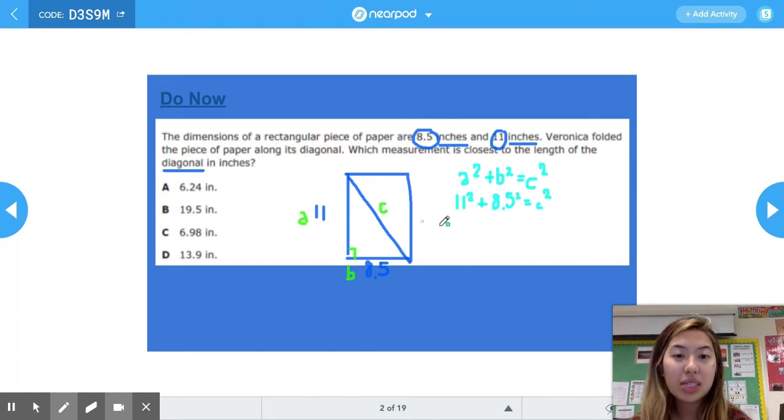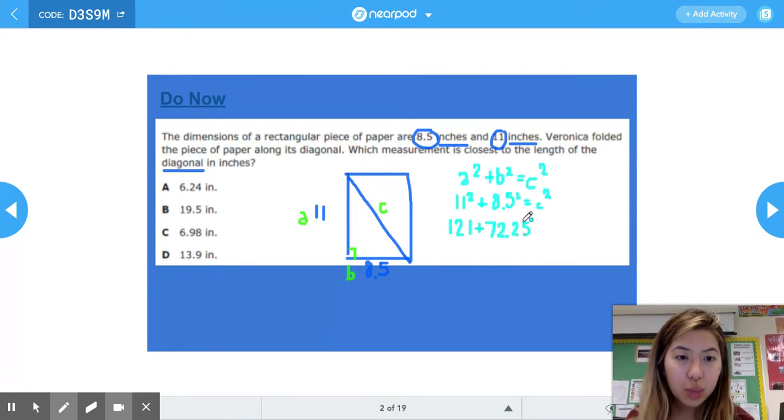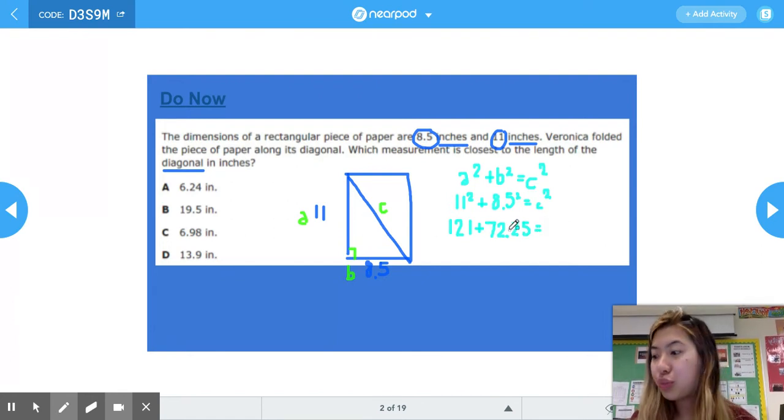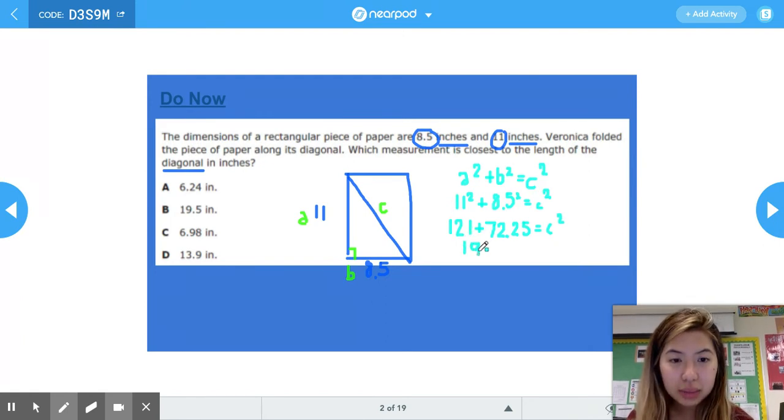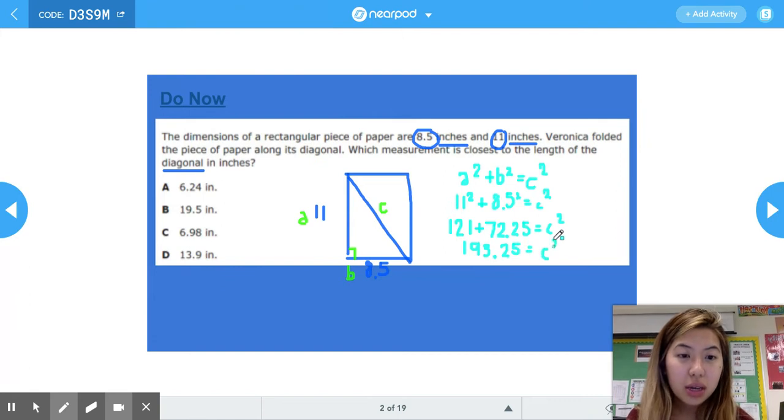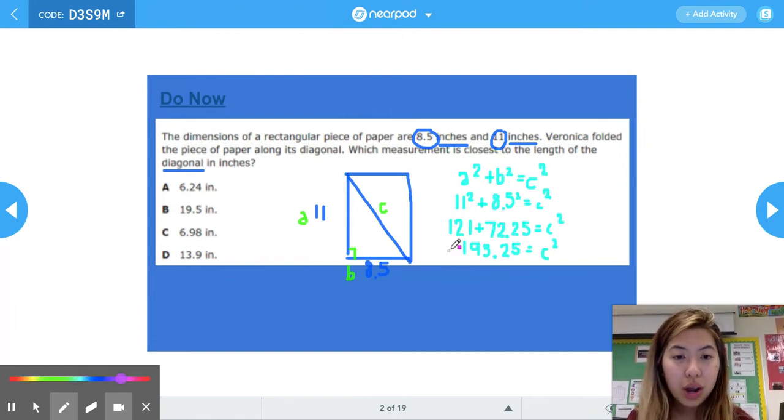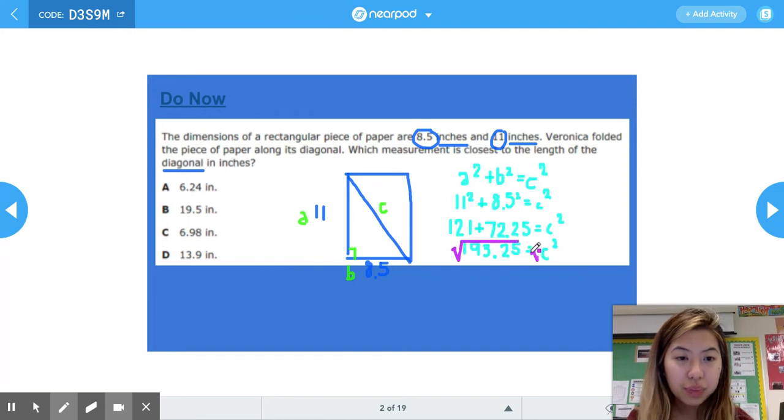11², 11 times 11 is 121. Then we have 8.5², so 8.5 times 8.5, which is 72.25. Then we add together 121 plus 72.25, which gives us 193.25. And we just want to find out what c is. To do that, we're going to find the square root of 193.25. When we round it to two decimal places, our answer is about 13.90.